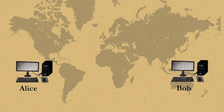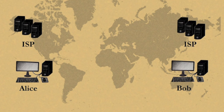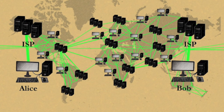Alice and Bob both have Internet Service Providers, or ISPs. Ideally, your ISP provides unrestricted access to the Internet. But at each stage of your connection, censorship and surveillance can occur.